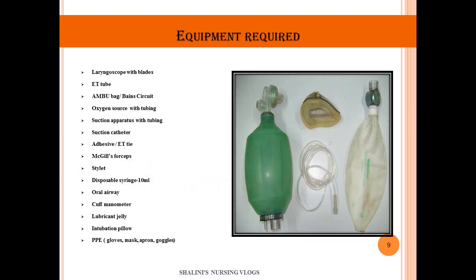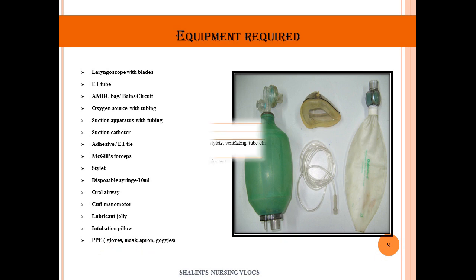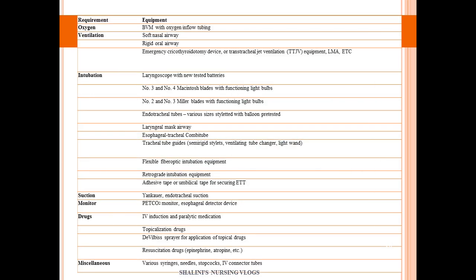Equipment required for intubation includes: laryngoscope with blades, endotracheal tube, Ambu bag or Bain circuit, oxygen source with tubing, suction apparatus with tubing, suction catheter, adhesive, McGill's forceps, stillet, disposable syringe (e.g., 10 ml), oral airway, cuff manometer, lubricant jelly, intubation pillow, and personal protective equipment including gloves, mask, apron, and goggles.